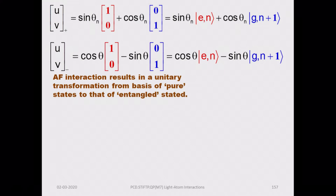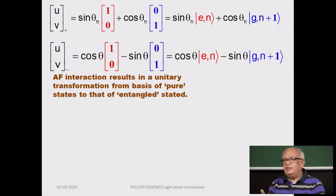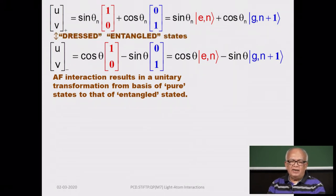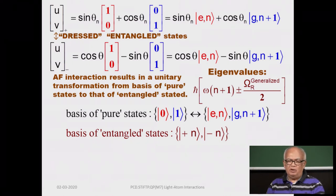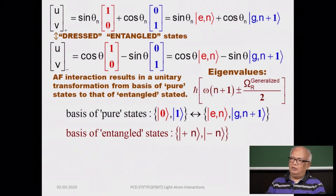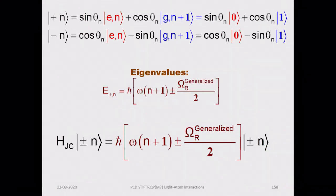The atom-field interaction has effected a unitary transformation from the pure states — the direct product states of the atom and the photon, i.e., the tensor product states — to the dressed states, labeled with the plus or minus sign. You can write these in terms of any basis, whether zero and one or orthogonal normalized states. The unitary transformation uses coefficients sine theta and cosine theta, with a minus sign for orthogonality. These are the dressed eigenstates and eigenvalues of the dressed atom.